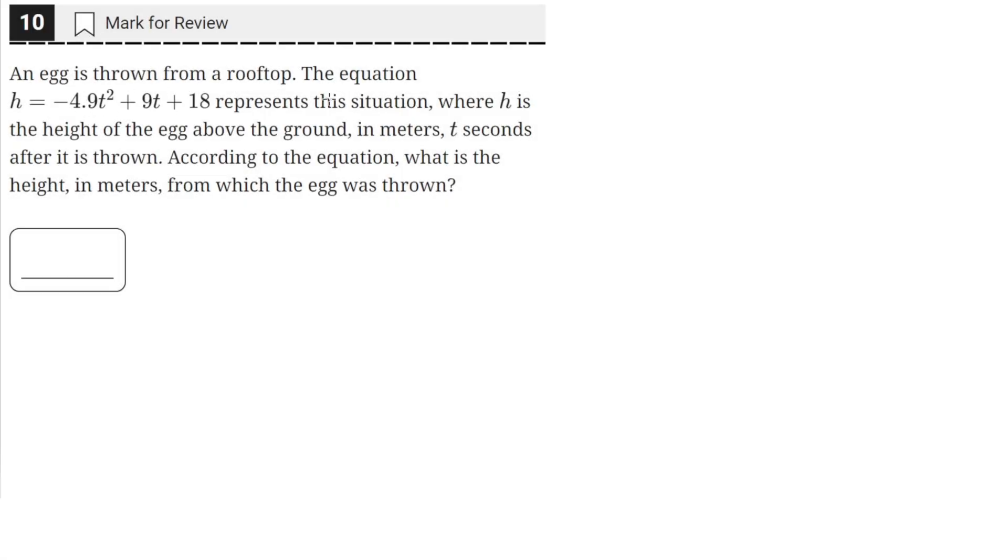An egg is thrown from a rooftop. The equation h equals this quantity here represents this situation where h is the height of the egg above the ground in meters, t seconds after it is thrown. According to the equation, what is the height in meters from which the egg was thrown?